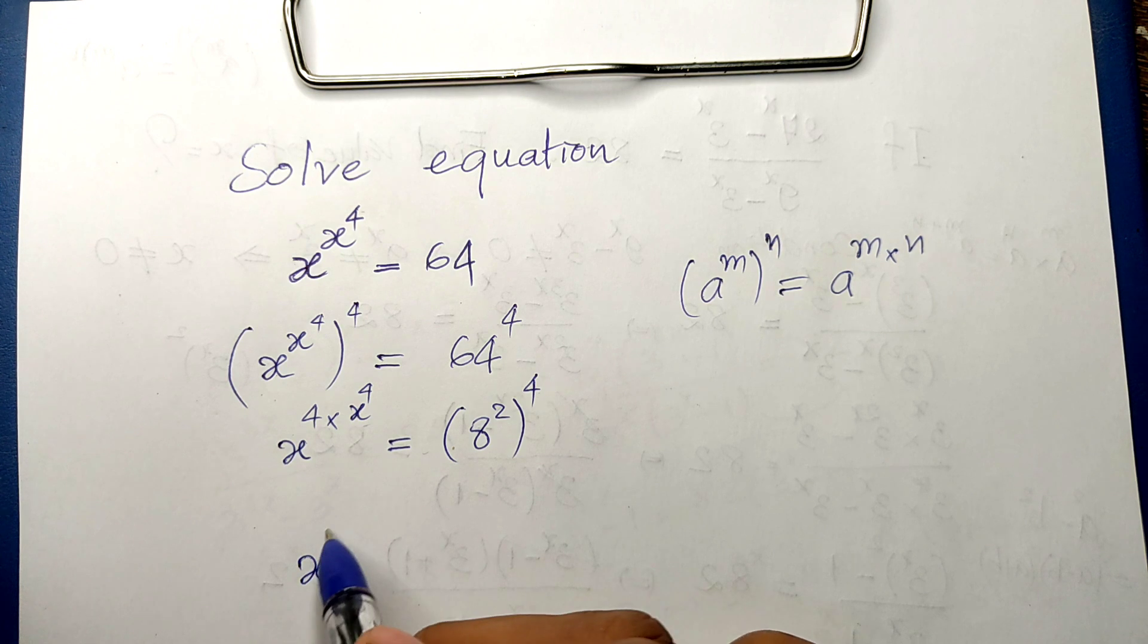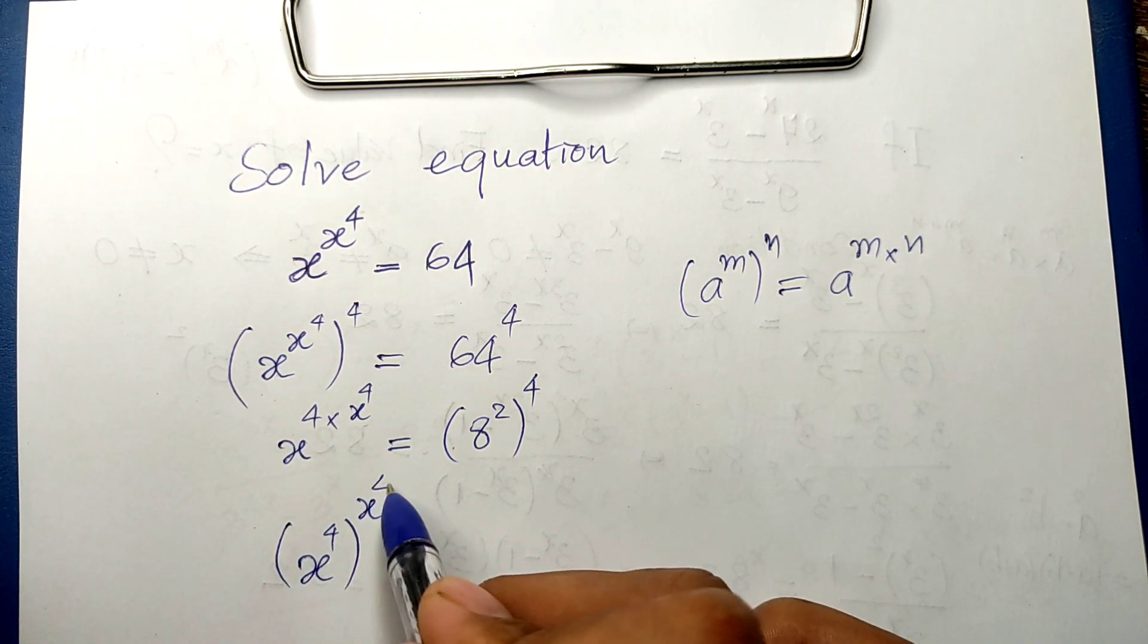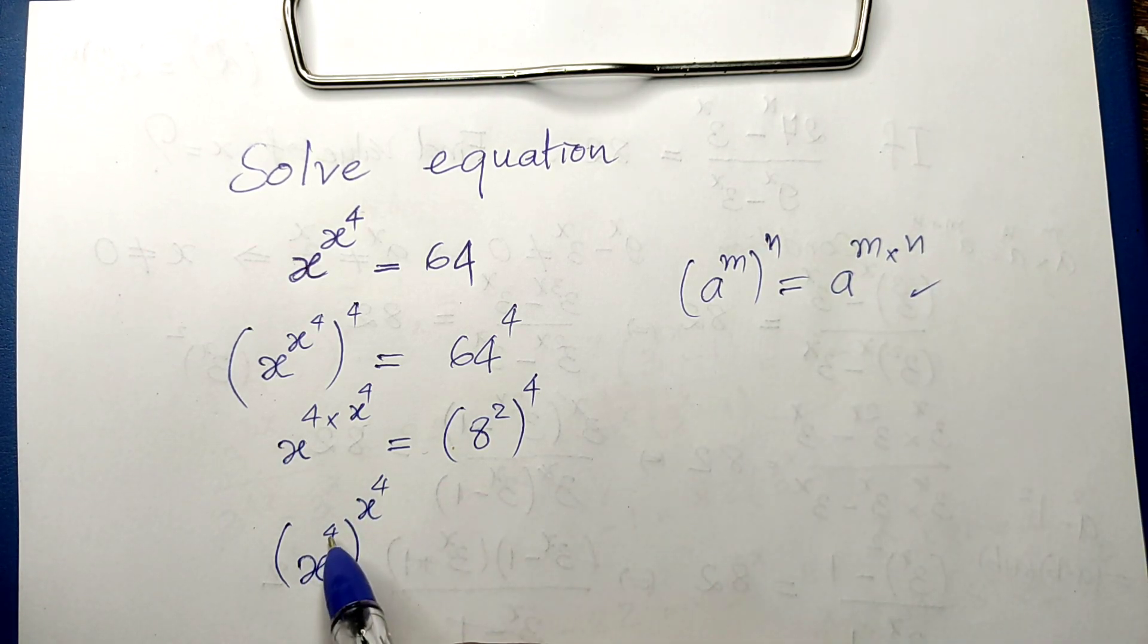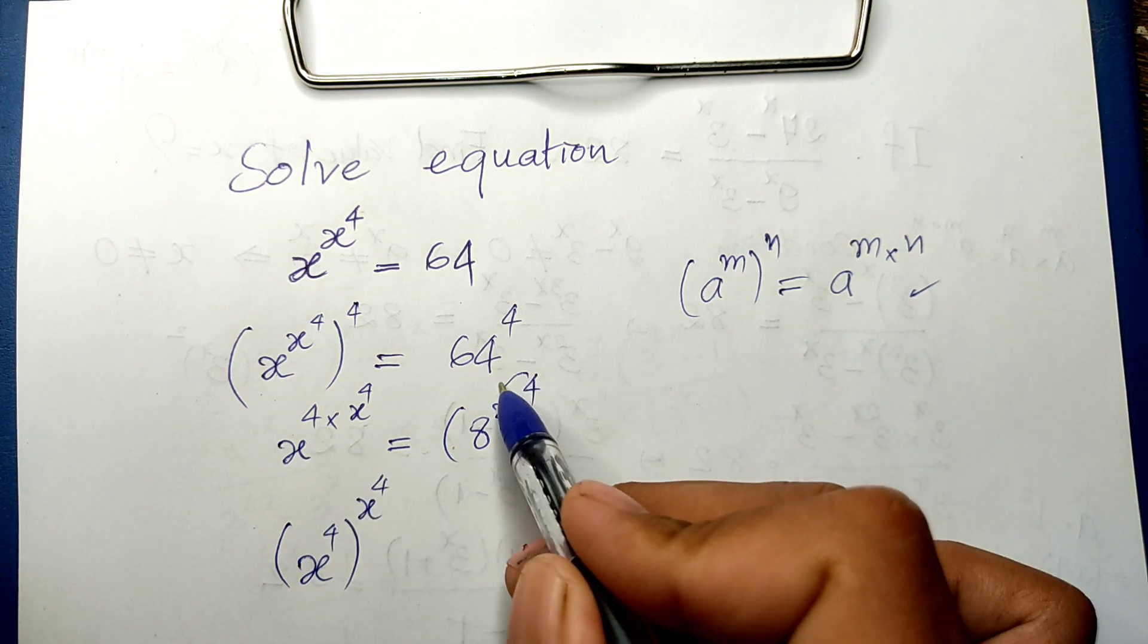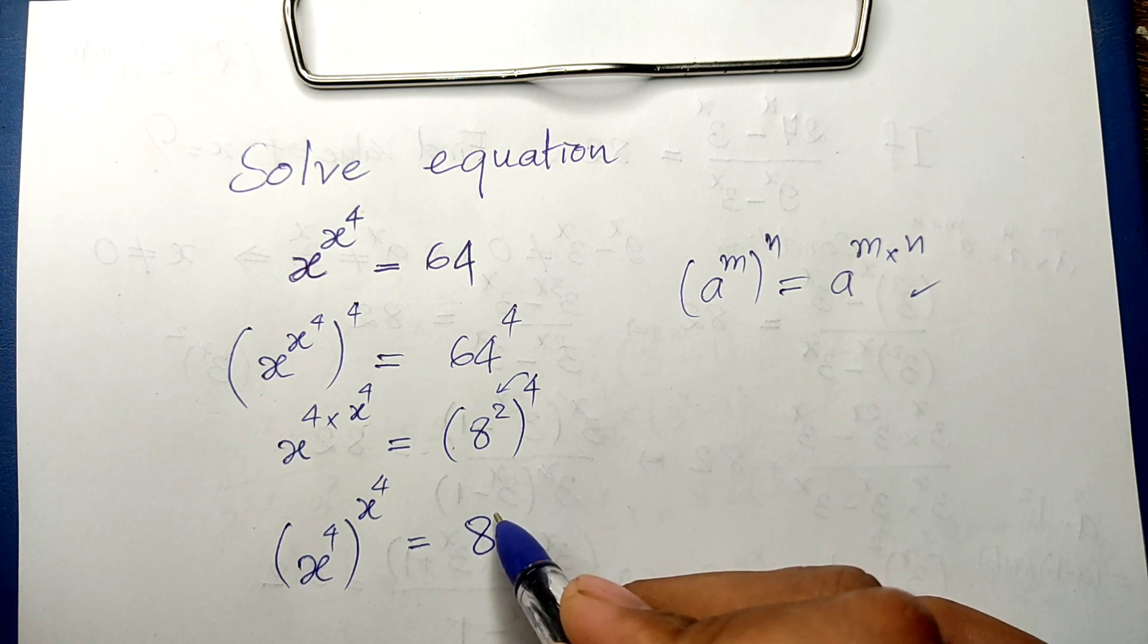And this we multiply in, so we get x to the power 8. Okay, now we see x to the 4th power, all to the power x to the 4th, and this x to the 8th.